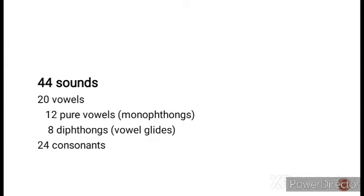There are 44 sounds and it is divided into 20 vowels and 24 consonants. These 20 vowels are again divided into 12 pure vowels and 8 diphthongs. 12 pure vowels are also called monophthongs, and diphthongs are also called vowel glides. There are 24 consonants in English.